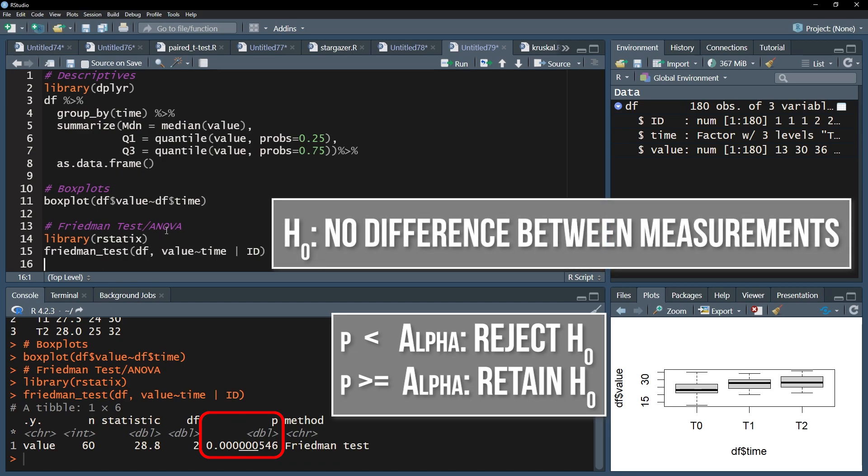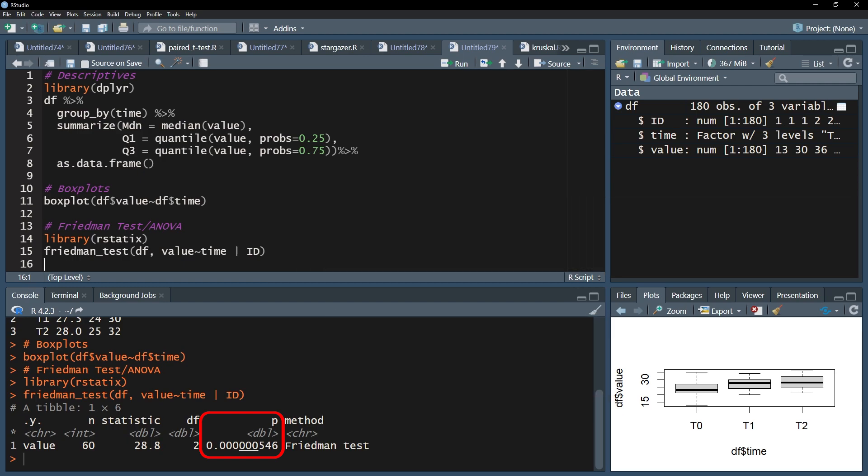The null hypothesis for the Friedman test assumes no difference of the medians between the measurements over time. In my case, I defined alpha as 0.05 and can therefore reject the null hypothesis. Because my p-value is very small with 5.46 times 10 to the negative 7, I can therefore conclude that the medians over time are different.